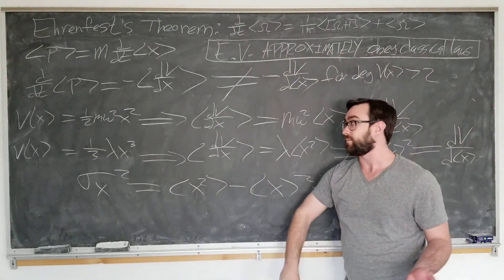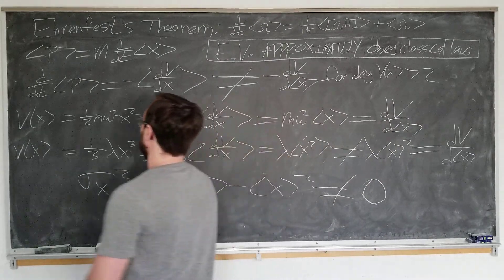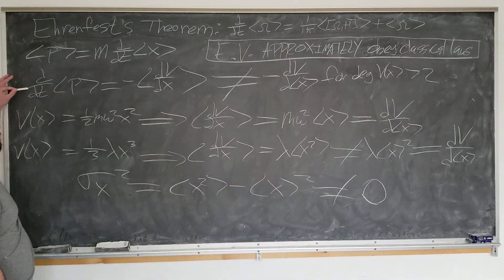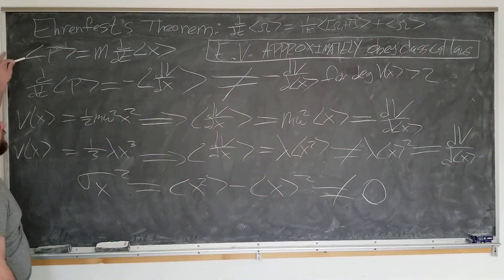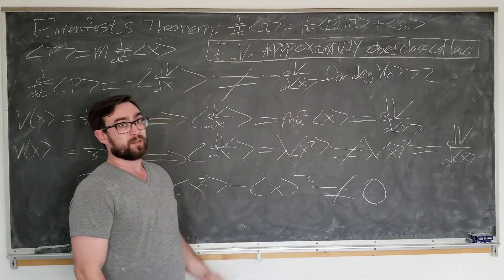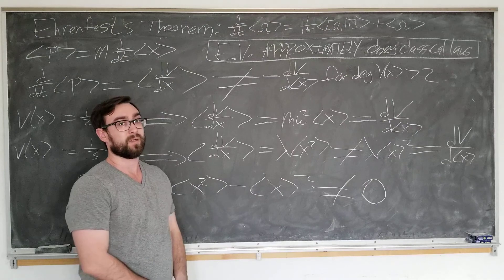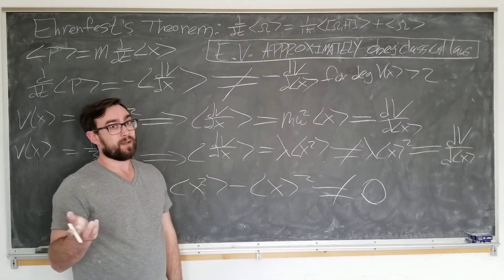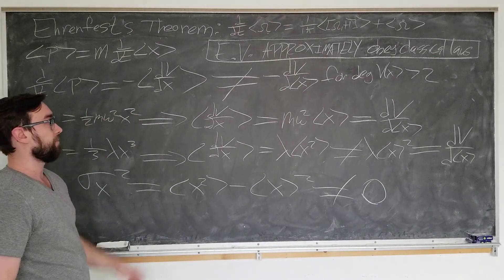And just a historical note, what we have derived here is actually known as Ehrenfest theorem, since he didn't actually derive the more general operator relation that was actually derived by Heisenberg, but there were more than enough things already named after Heisenberg, so we call both of them Ehrenfest theorem.